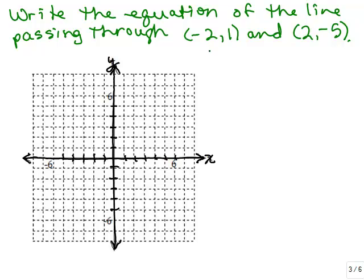We've got to plot negative 2, 1 — so we go to negative 2, 1, which will be right here. And then we've got to do 2, negative 5, which will be right here. Then you very carefully have to graph the line going through those two points.